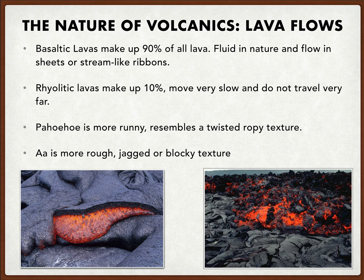Pahoehoe is a very runny material that resembles a twisted ropey texture. A'a is a term we use for very rough, jagged, or blocky lava on the surface. So looking at the images below, could you identify which one would be a pahoehoe or an a'a? The images are in the same order as the question — so these are some different examples.